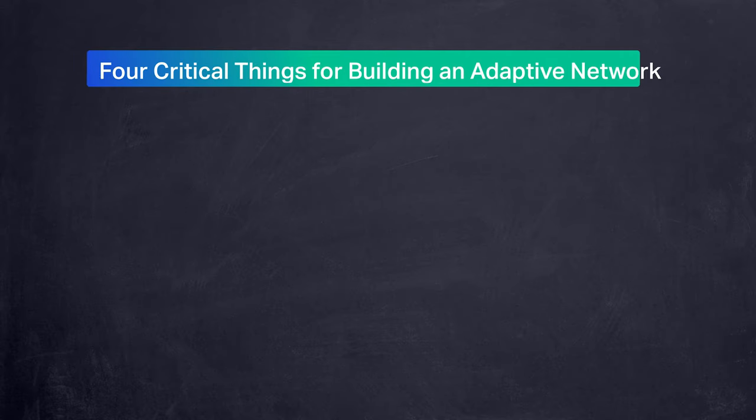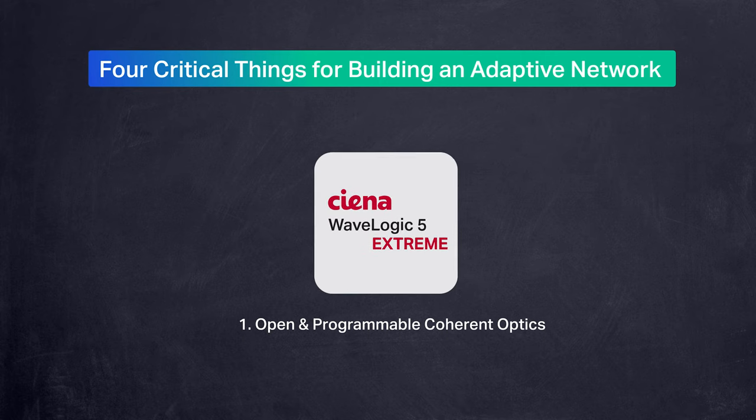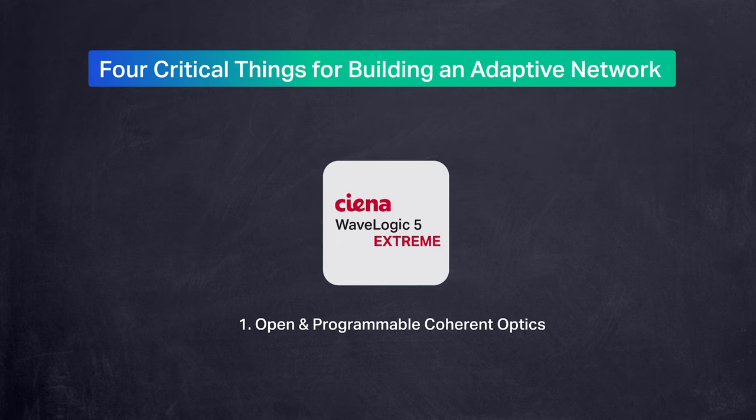There are fundamentally four critical things that go into building your adaptive network. First, right down at the physical layer, you want to use open and programmable coherent optics. That's how you're going to solve your transmission issues. This is the foundation of your infrastructure. Just like the foundation of any structure, pay attention to it. It's what everything else relies on.